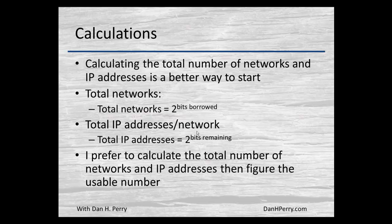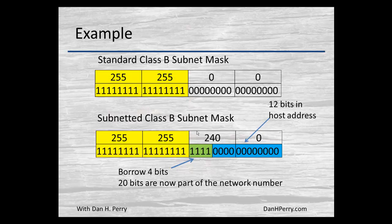By doing the total number first and then finding the usable, it makes not only the calculations a little easier, but when we later put them into a spreadsheet, automating it makes it an easier way to build. Going back to our example, we had a subnet mask of 255.255.0.0, which was a standard Class B mask.